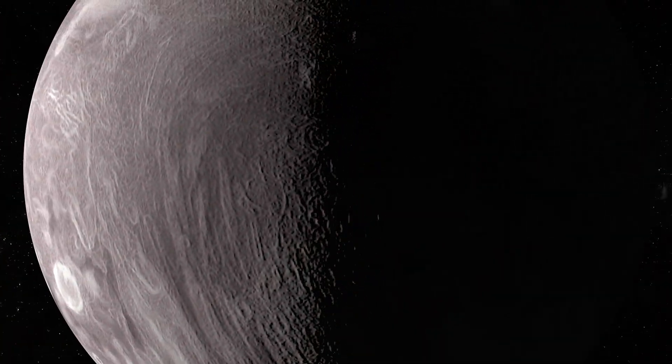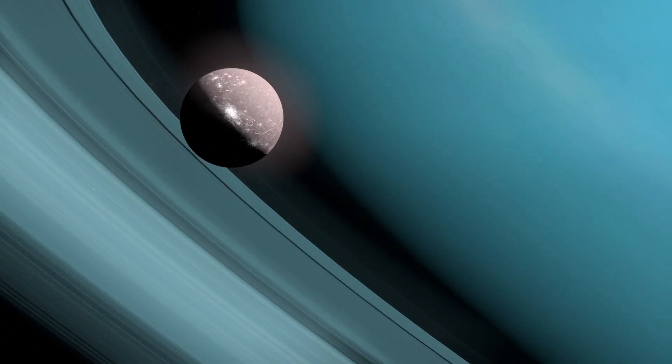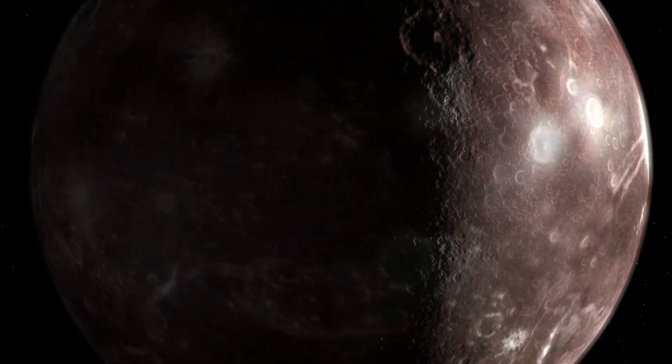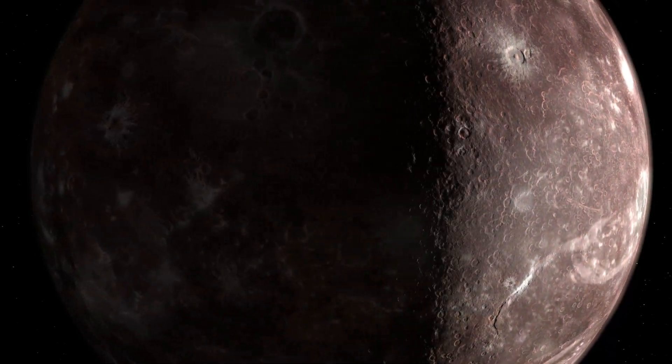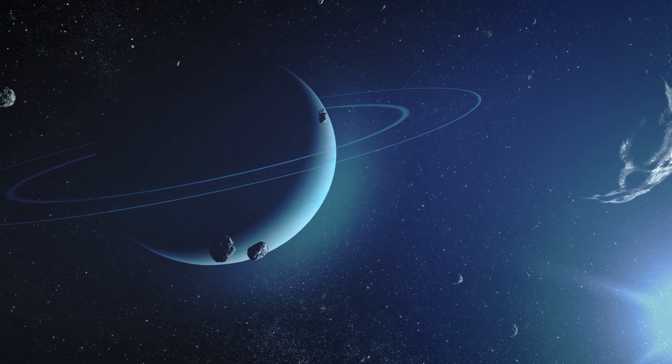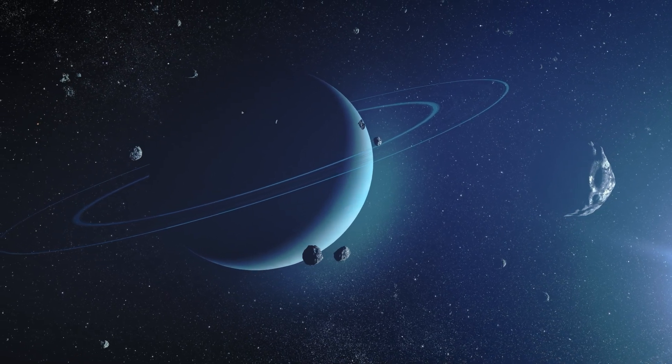For instance, Miranda has strange cliffs and valleys, and Ariel is covered in icy plains and bright white craters. Titania is Uranus' largest moon and has a surface of giant canyons and ice-covered mountains. Scientists believe these moons may have been hit by giant objects in the past, which changed their shapes.